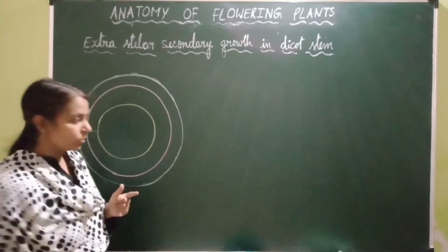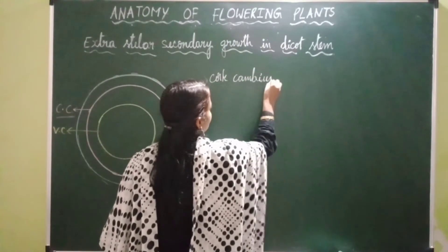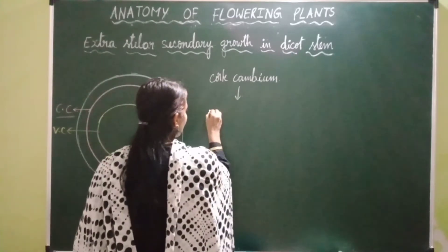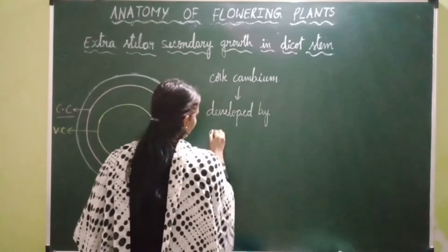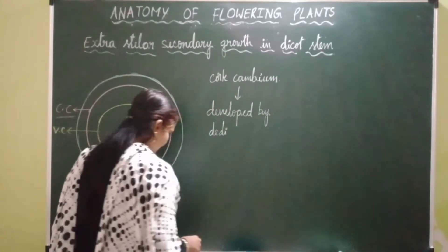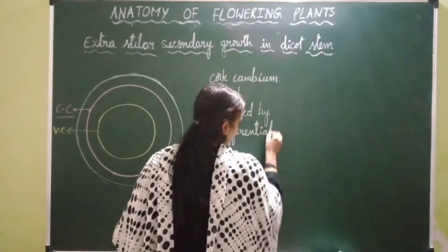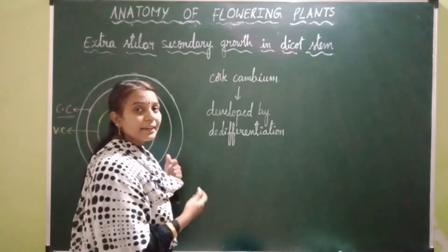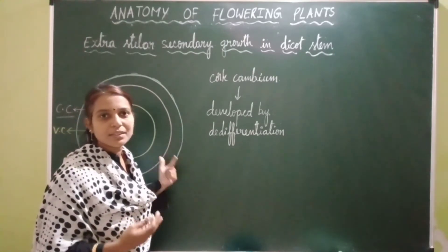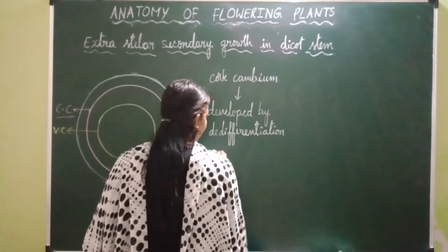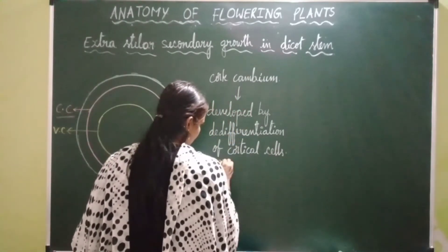Cork cambium develops by the de-differentiation of the cortical cells present in the general cortex. De-differentiation means regaining the capacity of cell division. So general cortical cells — that is, cells present in the general cortex — undergo de-differentiation and get re-differentiated into the secondary meristem, which is cork cambium. Since it is formed outside the stele, it is also called extra-stelar cambium.